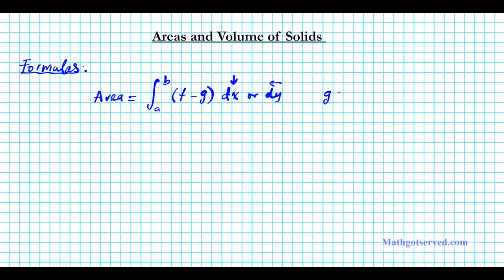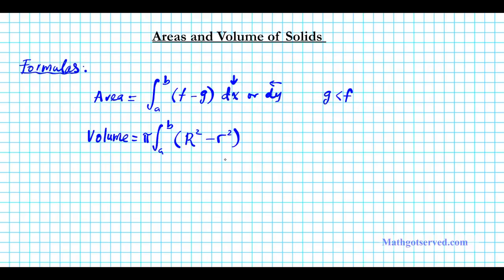In this orientation, G is less than F — either G is at the bottom of F or G is to the left of F. Now volume is a little more intricate. The volume formula is pi times the integral from A to B of the outer radius R squared minus the inner radius r squared. That gives us the area of the washer, and when we integrate from A to B we find the volume. DX is when your radius is perpendicular to the X axis, and DY is when your radius is perpendicular to the Y axis. There are two cases depending on the orientation of your axis of rotation.